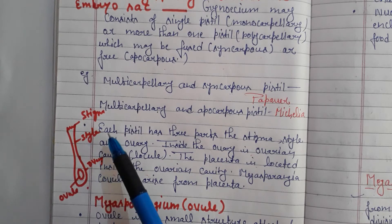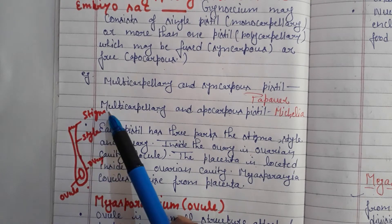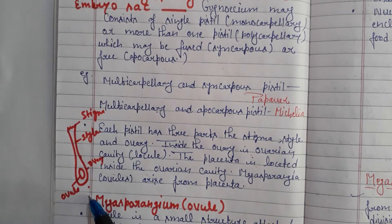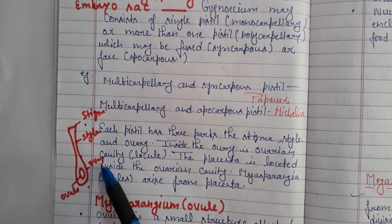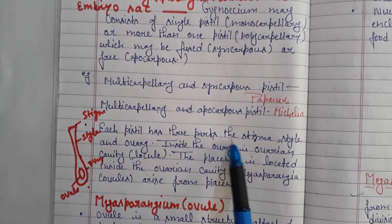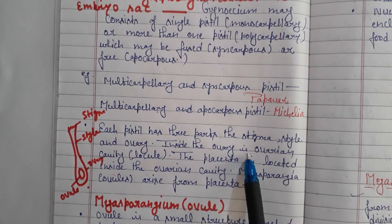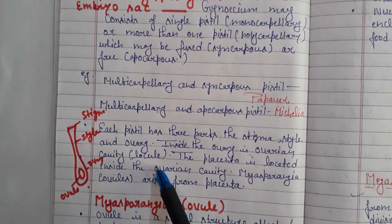Now you can see the structure of the female part. The pistil has three parts: the stigma, which is at the topmost part of the gynoecium; then the style; and the ovary. Inside the ovary is the ovarian cavity, also called the locule.